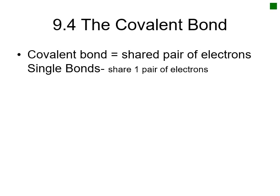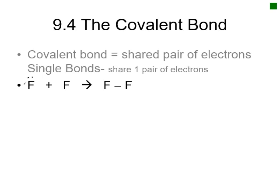A covalent bond is a bond formed by two atoms that are sharing a pair of electrons. We have different types of covalent bonds based on the number of electrons being shared. A single bond is sharing a total of two electrons, or one pair of electrons. You can see this with a fluorine molecule — remember, fluorine is diatomic. Each fluorine atom has a total of seven electrons in its outer shell, and those last single electrons can pair up to form one single bond.